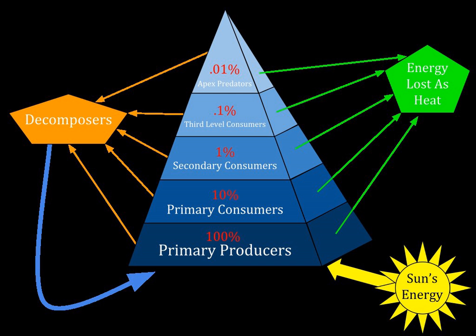A pyramid of biomass shows the relationship between biomass and trophic level by quantifying the biomass present at each trophic level of an energy community at a particular time. It is a graphical representation of biomass — the total amount of living or organic matter in an ecosystem — present in unit area at different trophic levels. Typical units are grams per meter squared or calories per meter squared. The pyramid of biomass may be inverted; for example, in a pond ecosystem, the standing crop of phytoplankton — the major producers — at any given point will be lower than the mass of the heterotrophs, such as fish and insects.